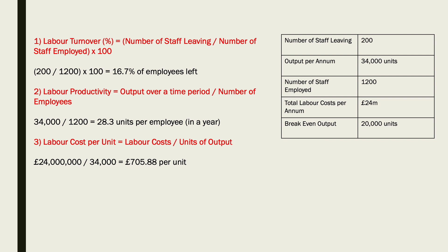Number two: labour productivity is output over a time period divided by number of employees. The time period here is clearly a year. So output per annum — 34,000 units — divided by number of staff employed, 1,200, which means each employee made 28.3 units over the course of a year.